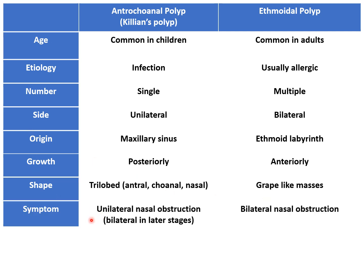Regarding symptoms, antrochoanal polyp generally causes unilateral nasal obstruction. But when it grows posteriorly to involve the nasopharynx, patients complain of bilateral nasal obstruction in later stages. Ethmoidal polyps, since they are present on both sides, cause bilateral nasal obstruction.